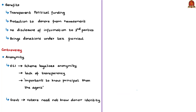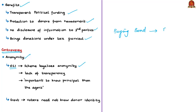The benefits of the scheme are: it paves the way for transparent political funding, it will protect donors from harassment, there will be no disclosure of information to third parties, and it will also help bring donations under the tax purview. However, the controversy is with respect to the anonymity offered by electoral bonds. Even the Election Commission of India had a stand against this anonymity, saying the scheme has legalized anonymity. The problem is that the information of the person who is buying the bond is known to the bank, but the donor's identity — who donates it to the political party — is not known.